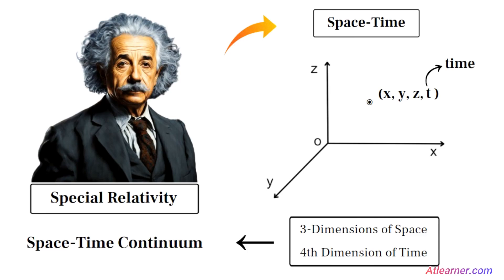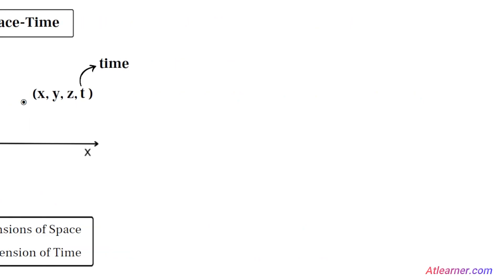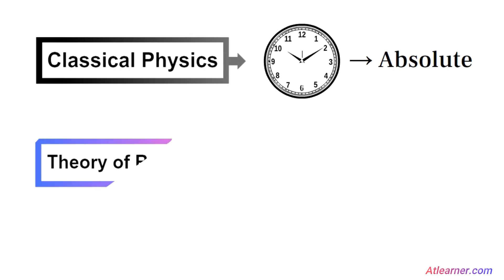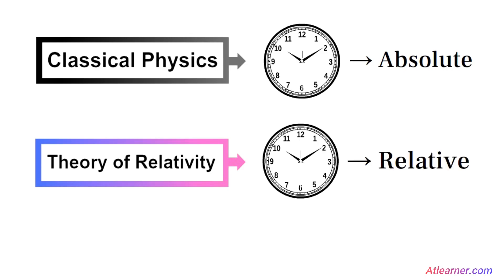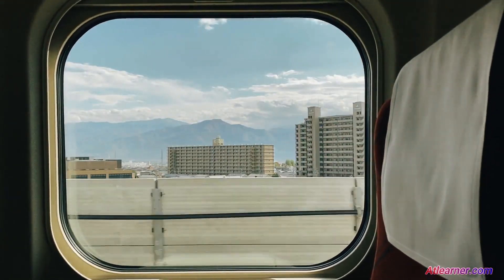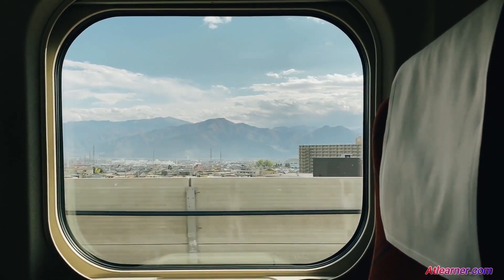The reason time is considered the fourth dimension in relativity is because of the relative nature of time. In classical physics, time was considered as an absolute quantity that flows equally for all observers. However, in the theory of relativity, time is relative to the observer's frame of reference and is dependent on their relative motion. This means that the perception of time can be affected by the speed of the observer.